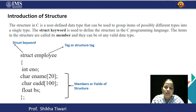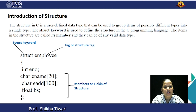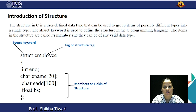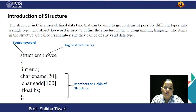Employee name is of character type, employee number will be of integer data type, address of the employee will be character also, and basic salary is in float. So if you want to do the same thing in array, it will not be possible because array is a homogeneous data type. But in structure, we group different data types together. This is the basic introduction of structure.